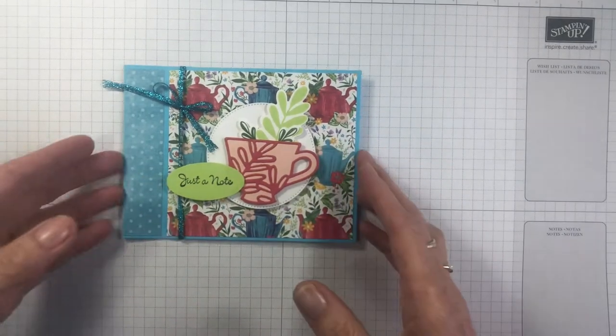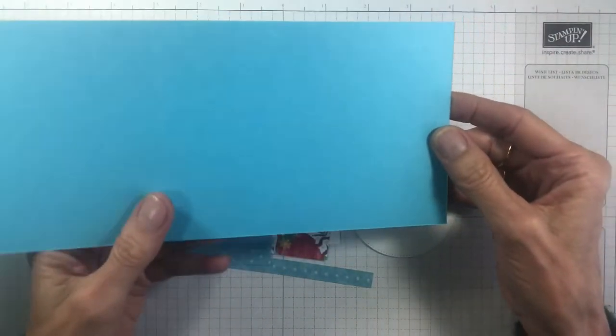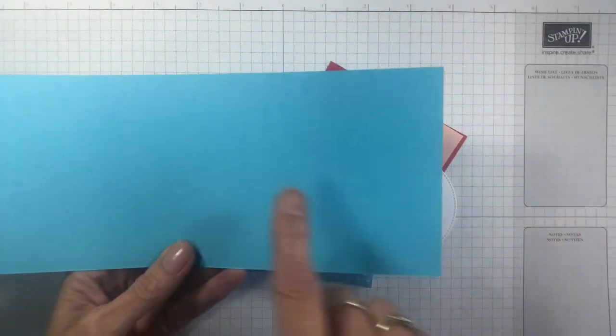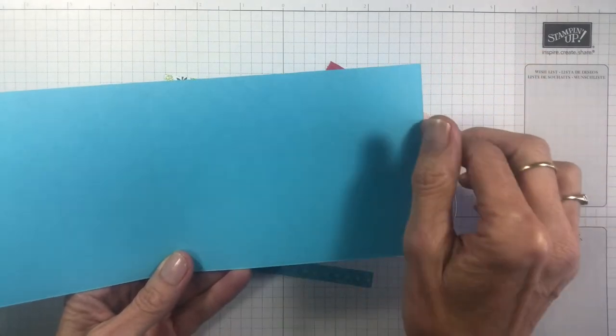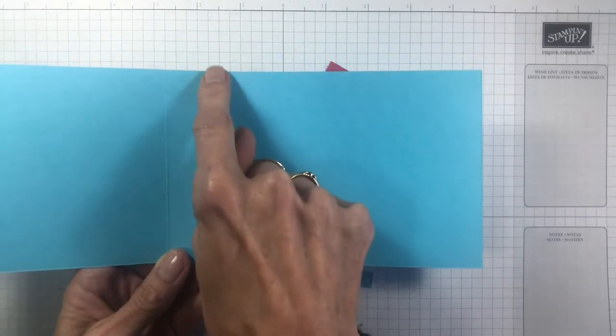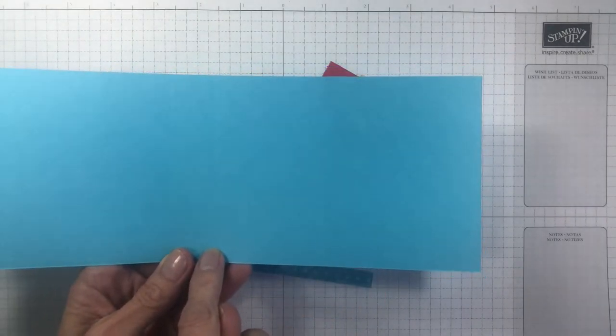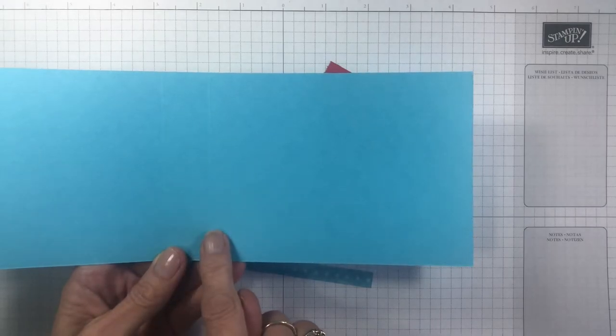So let's grab our pieces. You'll need your base card: 10.5 centimeters by 28 centimeters, or four and a quarter by 11 inches. This is scored at 11.5 centimeters and 14 centimeters, or four and a half and five and a half inches.